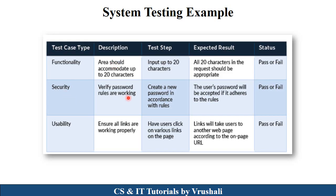The next example is security. In every application, there is a username and password option. For setting a password, there are rules — your password must be a minimum of eight digits and sometimes must include capital letters, small letters, numbers, and alphanumeric values. When a user generates a password as per the rules, security testing passes. But when a user generates only a six-digit password, an error is generated and security testing fails. The last example is usability — in a particular website, there are various links. In usability testing, they test whether each link properly opens the next page and whether every link properly works and loads.